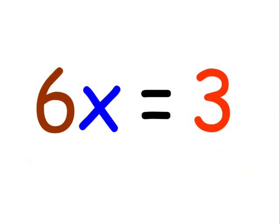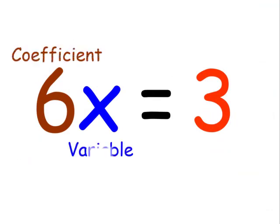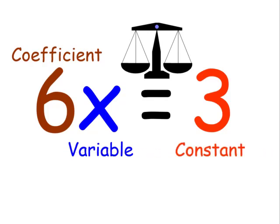Let's take a look. 6 is the coefficient, x is the variable. Now the equal sign is our balance, and 3 is our constant.